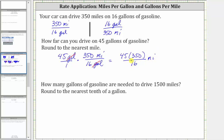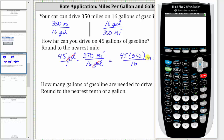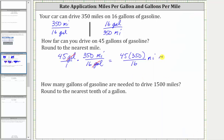Now let's evaluate this quotient, and we are told to round to the nearest mile. We need parentheses around the numerator, so we have open parentheses 45 times 350, close parentheses, divided by 16, enter. We're told to round to the nearest mile. Because we have a three in the tenths place value, we round down. The number of miles is approximately 984. You can drive 984 miles on 45 gallons of gasoline.